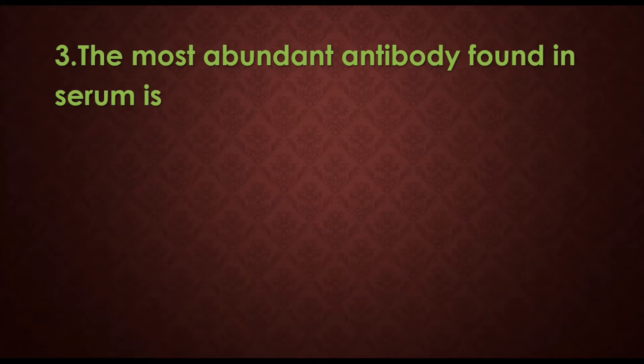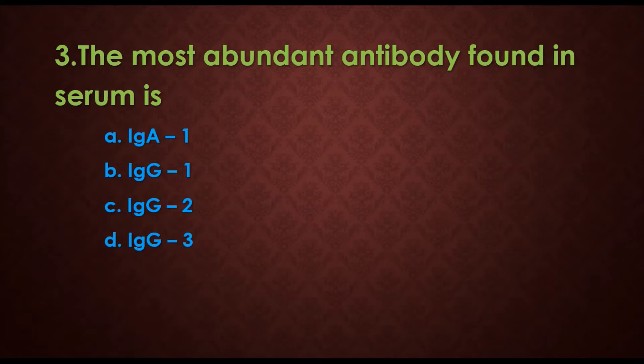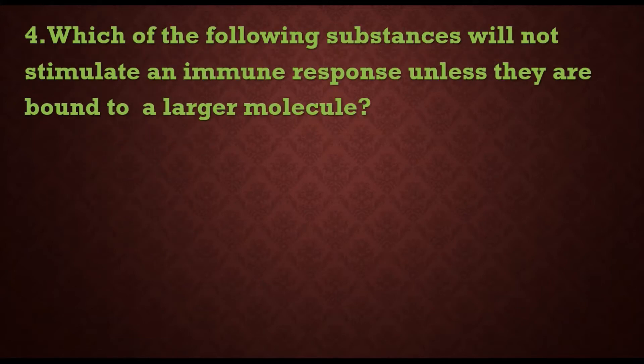Third question: the most abundant antibody found in serum — the most abundant immunoglobulin. Options are: a) IgA, b) IgG1, c) IgG2, d) IgG3. The answer is IgA, which is present in all types of secretions and is the most abundant antibody.